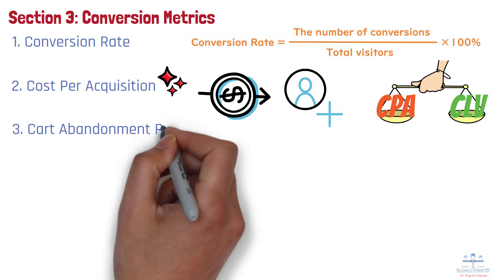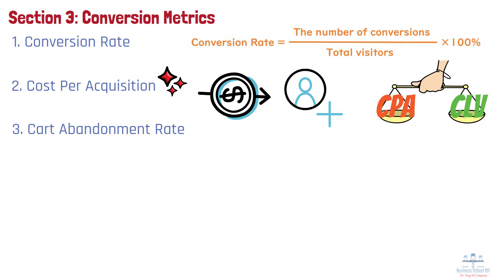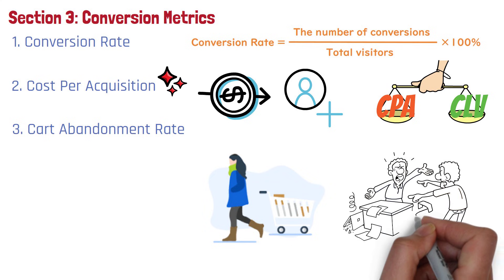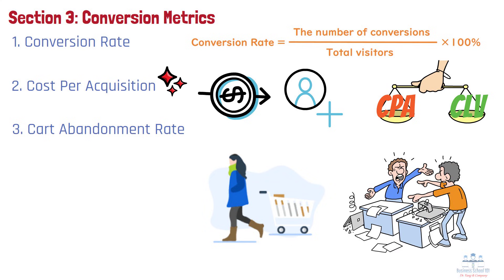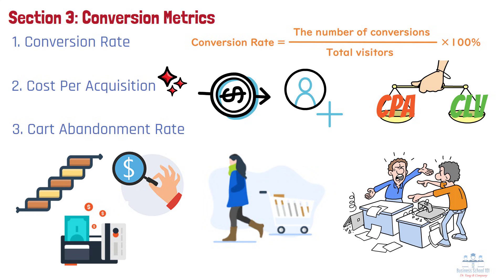Number 3. Cart Abandonment Rate. Cart abandonment rate tracks the percentage of shoppers who add items to their cart but leave before completing the purchase. A high abandonment rate can signal friction in the checkout process, like too many steps, unexpected costs, or lack of payment options. Fixing these issues can significantly increase revenue without needing more traffic.